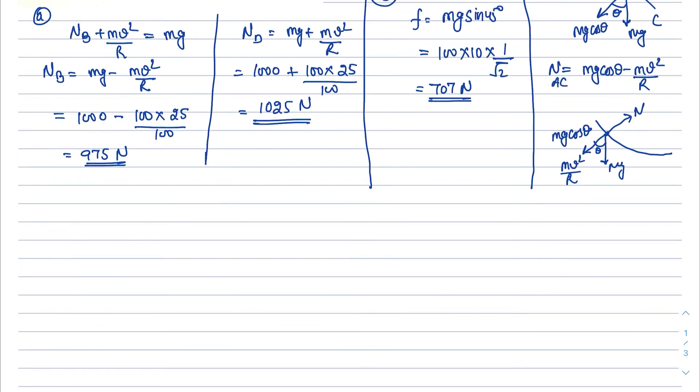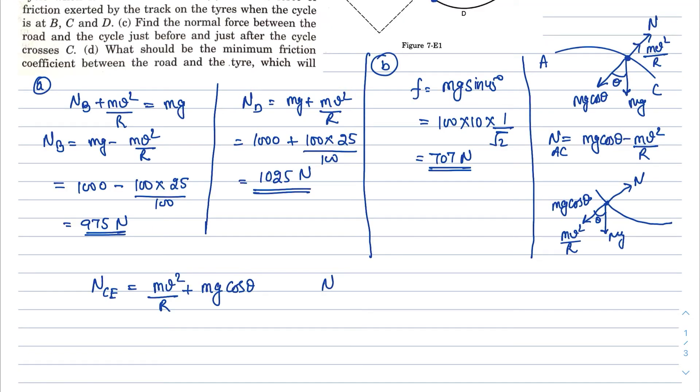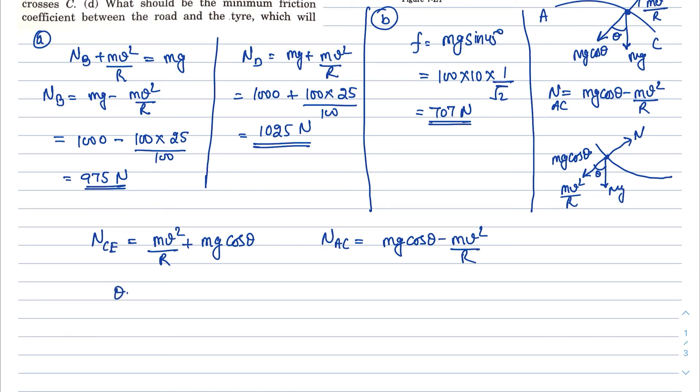So in this particular case, this N will become, let's say this is NCE is equal to MV square by R plus MG cos theta. Now from A to C, that was NAC is equal to MG cos theta minus MV square by R. Now at point C, theta is equal to 45 degree, R is 100 meter, M is 100 kg and velocity of the cycle V is 5 meter per second.